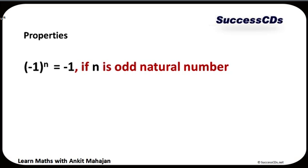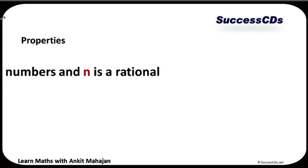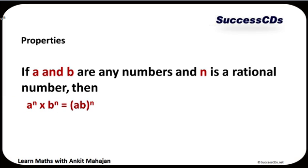Let's discuss some other very important properties. If I have minus 1 raised to the power n, I don't have to actually calculate it. It becomes minus 1 if n is any odd natural number. For example, minus 1 raised to the power 9 — since 9 is an odd number, the answer is automatically minus 1. The same way, minus 1 raised to the power n is always going to be 1 if n is an even natural number. For example, minus 1 raised to the power 12 — all the negative signs cancel out and the answer will be 1.